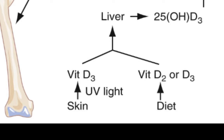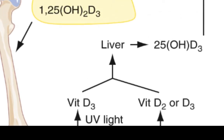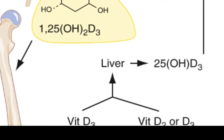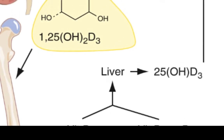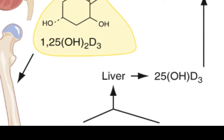Vitamin D, after entering the body, arrives at the liver where it is hydroxylated to produce 25-hydroxy vitamin D, or calcidiol. This form is not active as well and is not regulated physiologically.